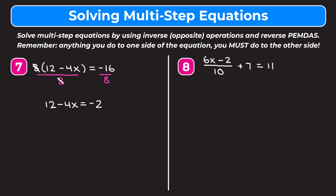Reverse PEMDAS tells us to get rid of the 12 being added before the negative 4 being multiplied. So we subtract 12 from both sides. On the left 12 minus 12 is 0, leaving negative 4x. On the right negative 2 minus 12 is negative 14. Then we divide both sides by negative 4. The negative 4s cancel, leaving x.